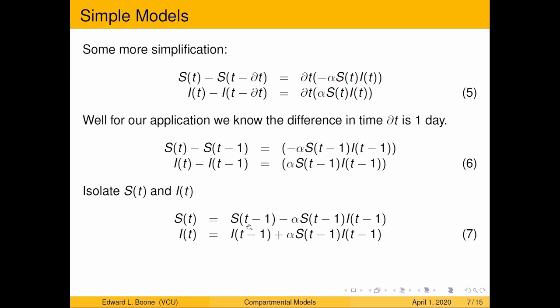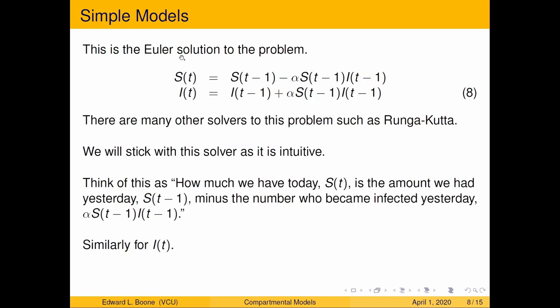When I solve for S(t), this is a really good interpretation and this is a solver that we can use. This is the Euler solution to the problem. There's lots of other solvers. If you're a math person you're probably going to scream at me and say you're not making it complex enough. No, this is easy stuff. This is the Euler solution to the problem.